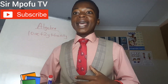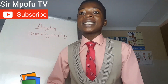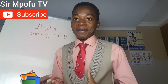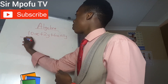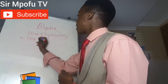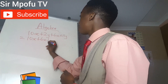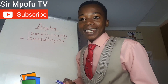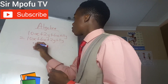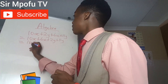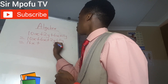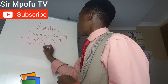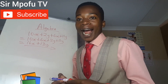So when you're solving an expression with different algebras, it's simple and straightforward. You just have to collect like terms and simplify. By collecting like terms — those with x — it's going to be 10x plus 6x plus 2y plus 11y. Then you simplify: 10x plus 6x is 16x, and 2y plus 11y is 13y.